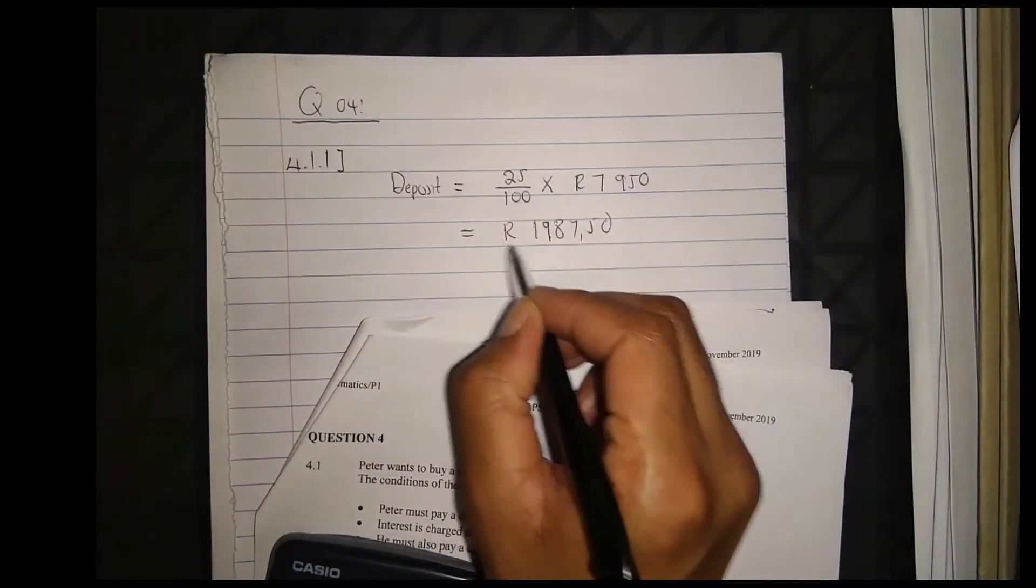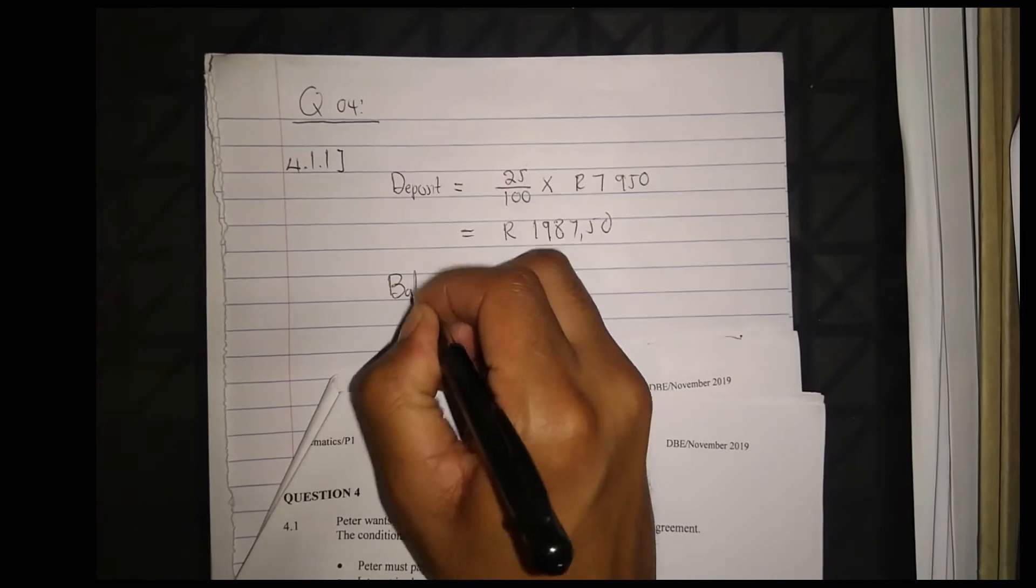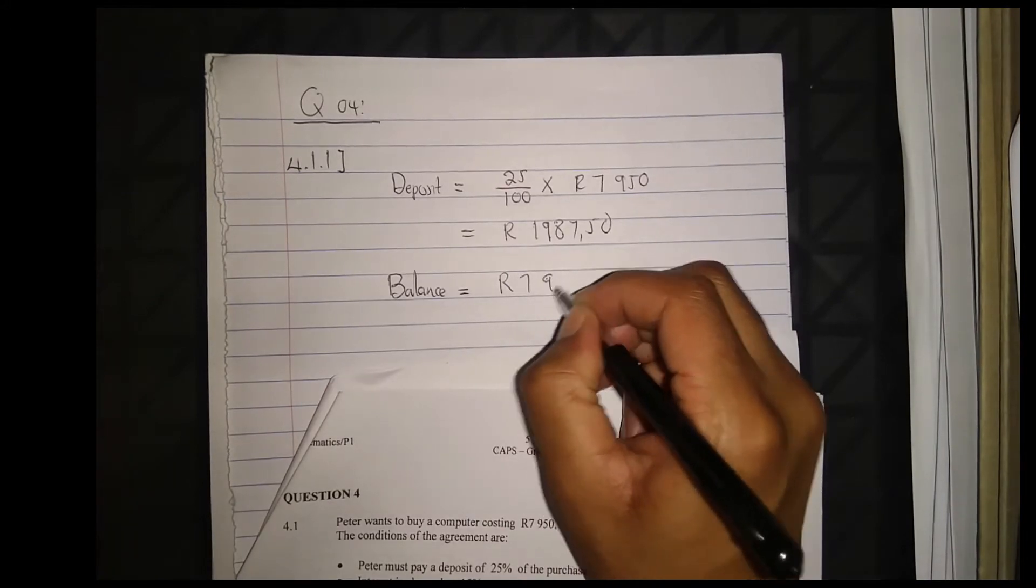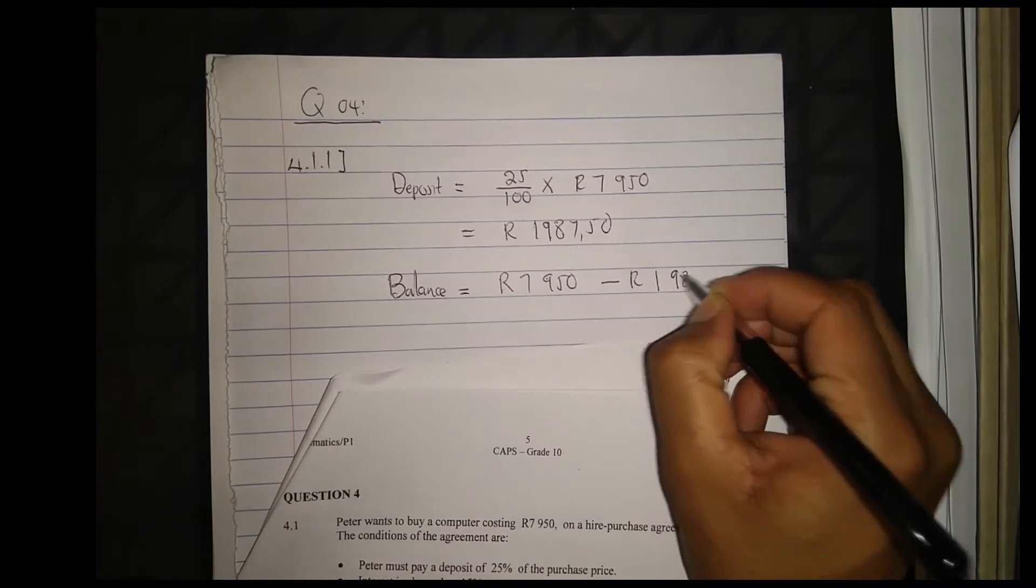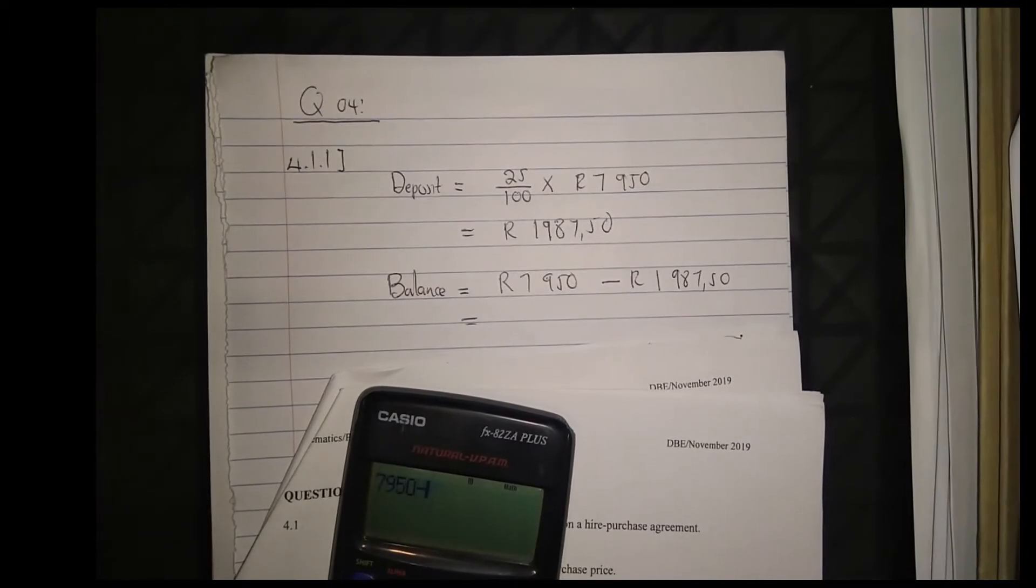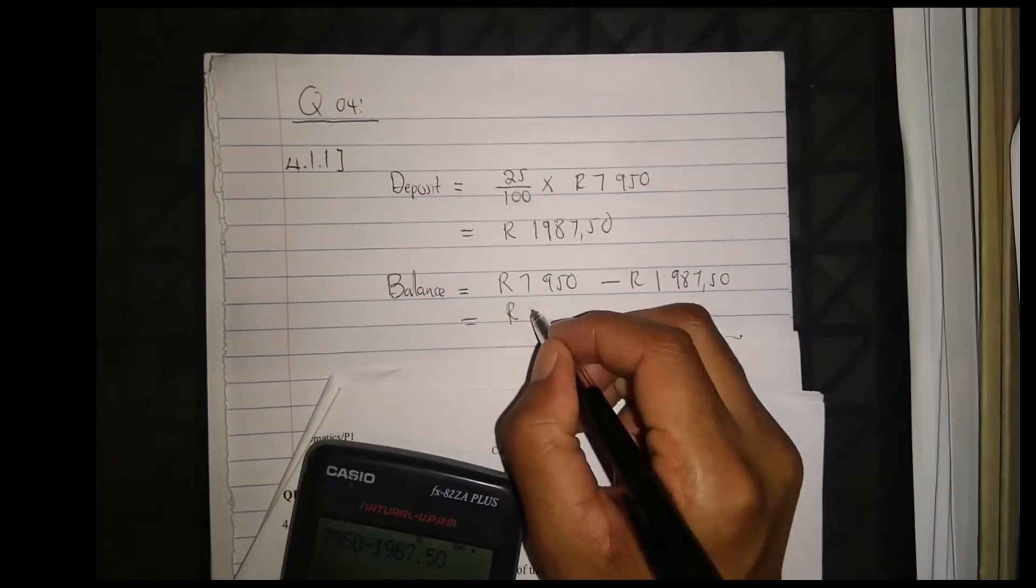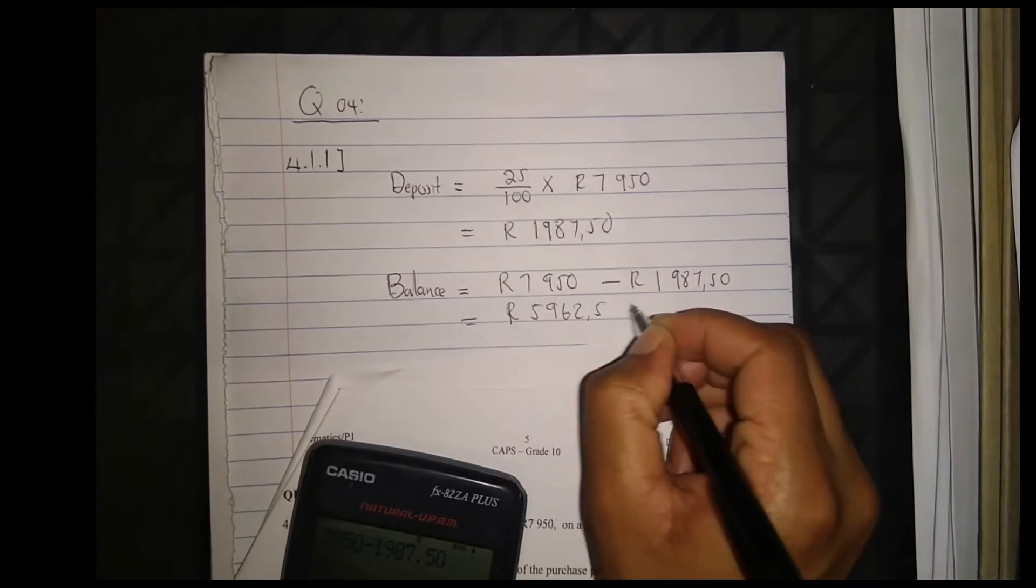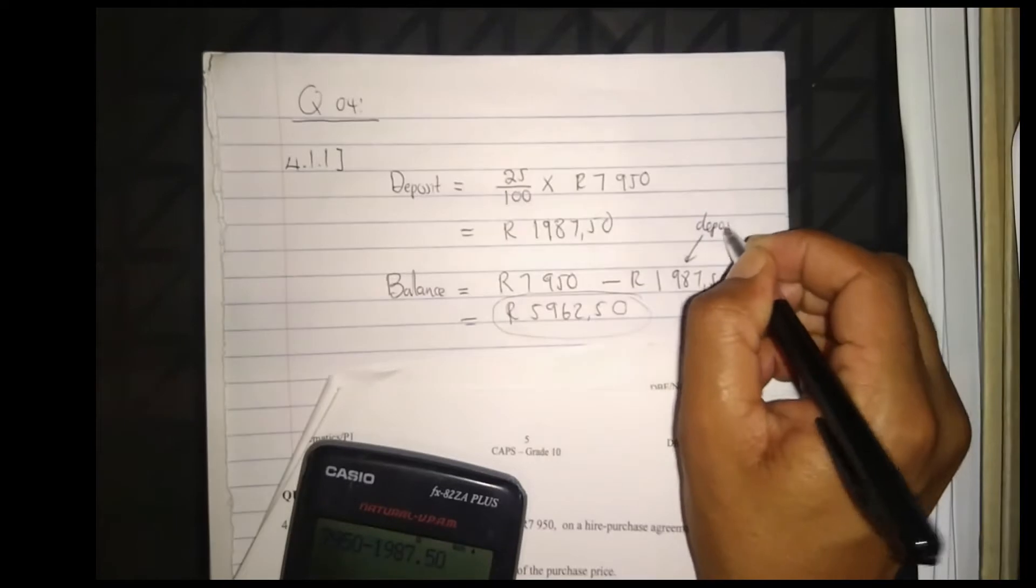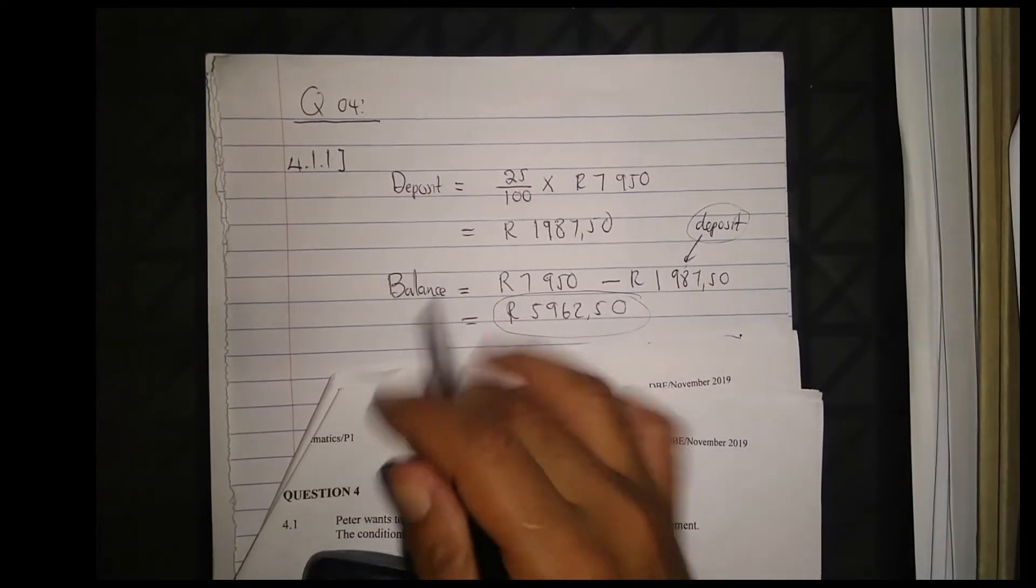Therefore, the balance after paying the deposit is 7,950 rand minus 1,987.50, which equals 5,962.50. This is the balance after paying the deposit. Peter will take out a loan for this balance.